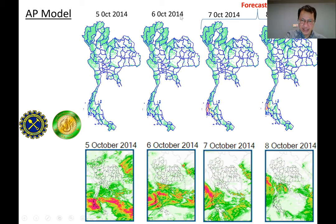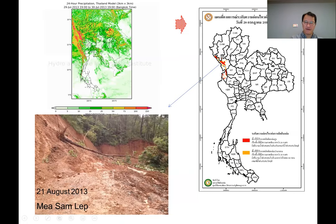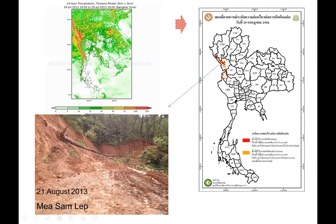For example, on the 7th and 8th of October 2014, we had a prediction that there was going to be a landslide in the southern part of Thailand, based on the forecasting rainfall information. We use what we call the AP model, or antecedent precipitation model, in order to make a warning to people living in risky areas.